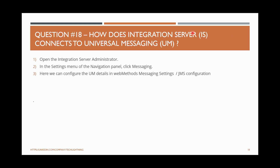How does Integration Server connect to Universal Messaging? If you have IS and UM installed on separate or the same machine, they need to communicate to enable publish-subscribe mechanisms. You log into IS administrator page, go to the Settings menu in the left navigation panel, and find Messaging. Under webMethods Messaging Settings, there is a JMS or UM configuration section where you configure the UM connection — providing the UM IP, port, and other details. This is similar to how broker connections were configured previously, but now replaced with a Universal Messaging server connection.